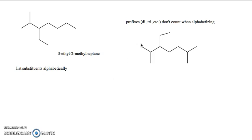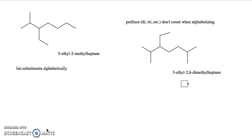One last point: prefixes like di- and tri- do not count when alphabetizing. In this molecule the longest chain is seven carbons — another heptane — with two methyl groups and one ethyl. When naming it, we get 3-ethyl-2,6-dimethylheptane. The 'di-' of dimethyl does not make it come before ethyl; we ignore the di- and tri- prefixes when alphabetizing.